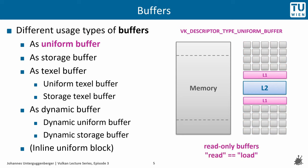The point with uniform buffers is that they are read-only, where the term the Vulkan specification uses is load. Uniform buffers can only be loaded but not written to from shader programs. This allows the GPU to cache them efficiently, which might not always be as efficient for different usage types, namely storage buffers.